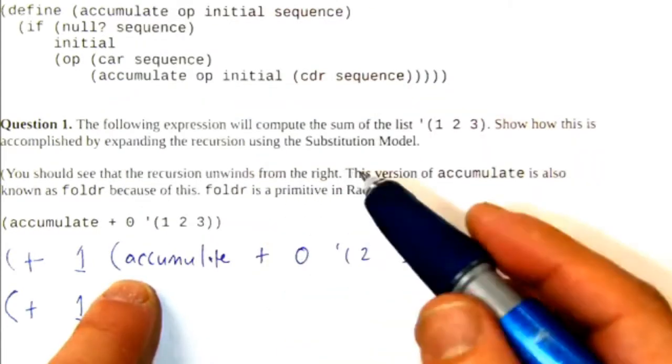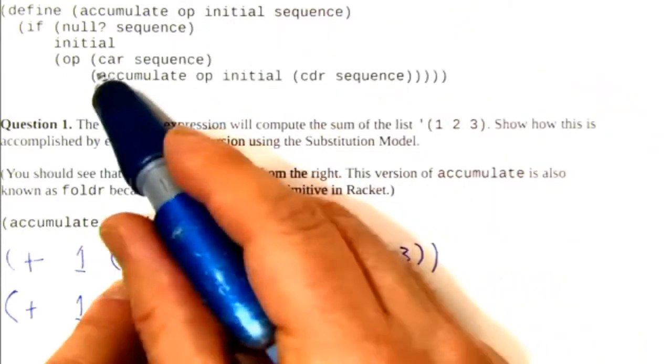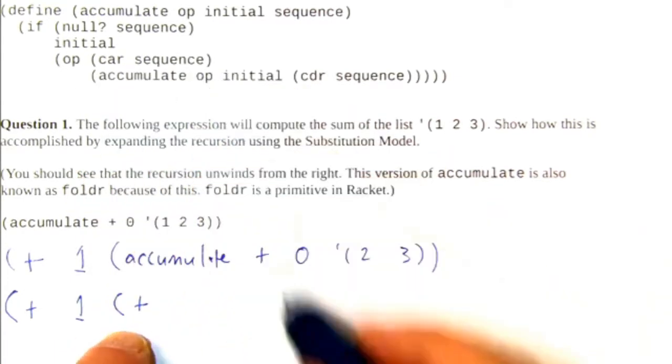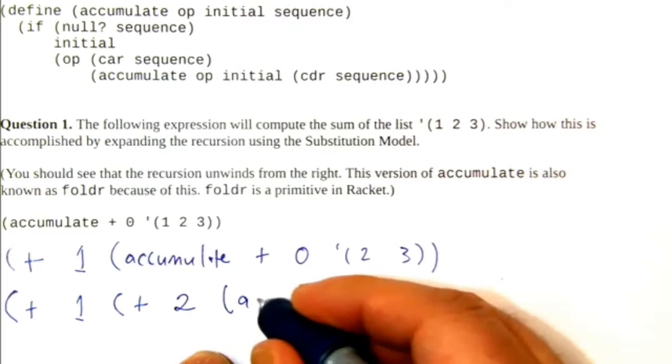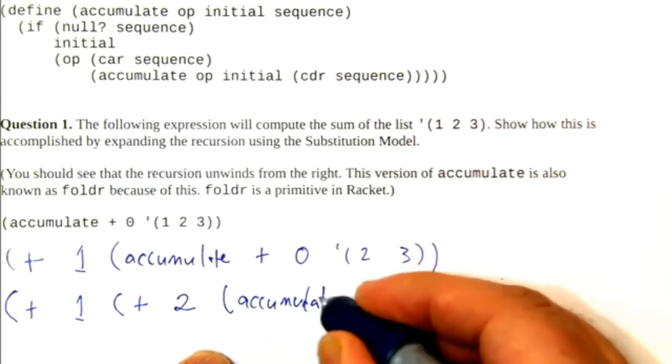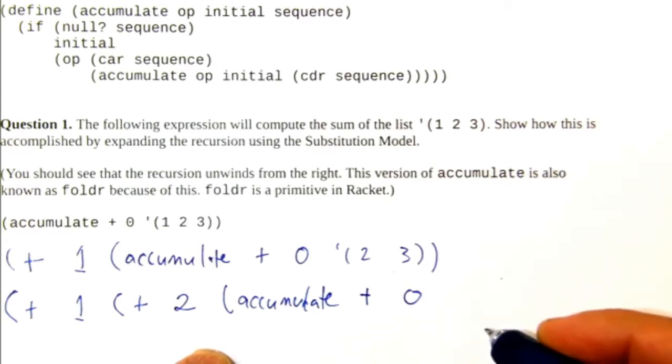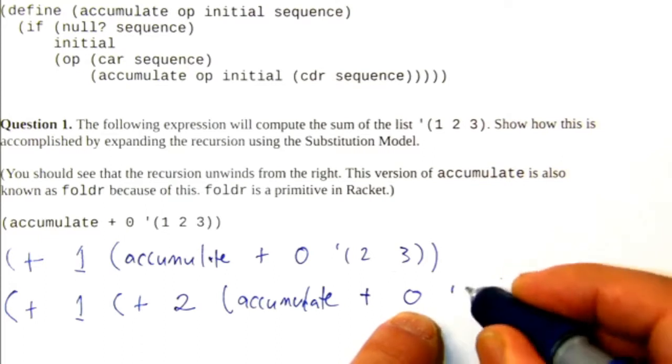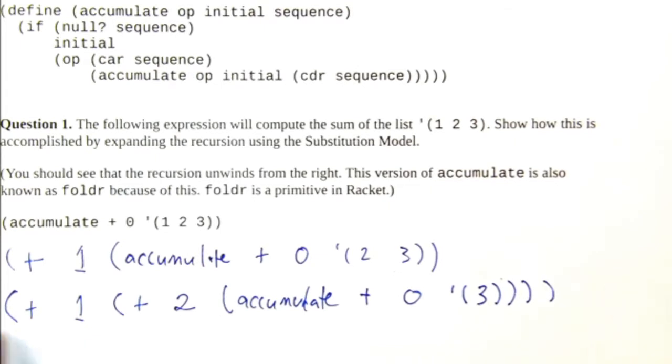We go into accumulate, and initial is still 0. Sequence is not null, so we do another recursive call. So op is plus. We add together the car of the sequence. The sequence is the list 2, 3 now, so the car is 2. And a recursive call. We hand back in the op procedure. We hand back in the, by the way, initial is the base case at the end. Those are synonyms in this instance. And then we cdr down the list. So now the list is a list of one item, the item 3. And we can close the parens.